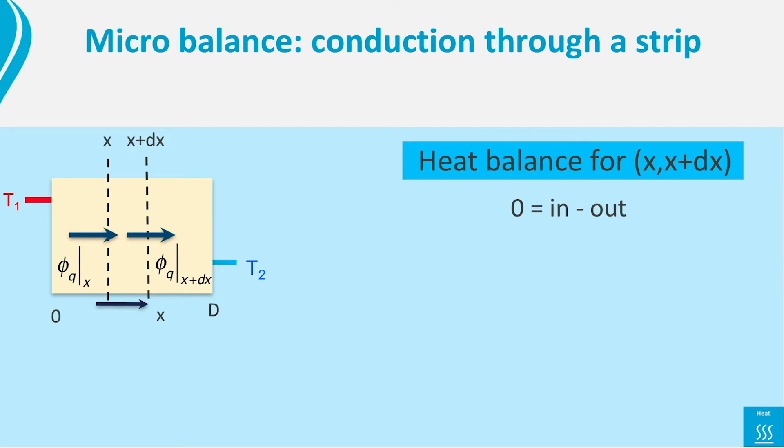The heat balance for the strip between x and x plus dx is 0 equals in minus out, as it is a steady state without production. Or by putting in the heat flows, 0 equals phi_q at x minus phi_q at x plus dx.